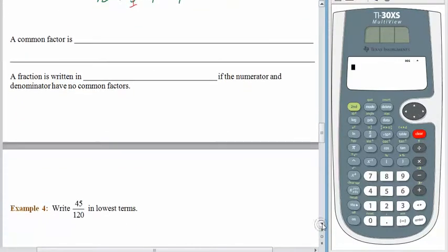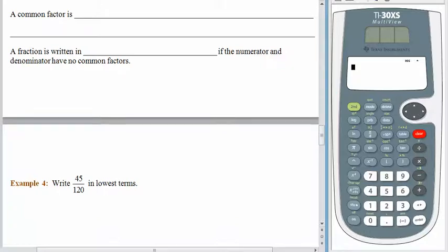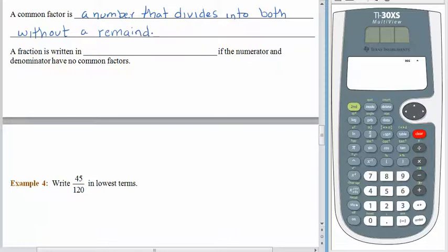Just to complete our vocabulary: a common factor is a number that divides into both numbers without a remainder. A fraction that is written in lowest terms shows a numerator and a denominator that have no common factors. So all that work we did a few lessons ago, trying to figure out what the prime factorization of a number was, what a number might be divisible by, will come in handy here.